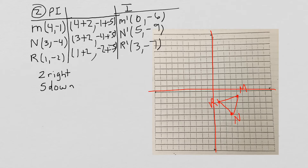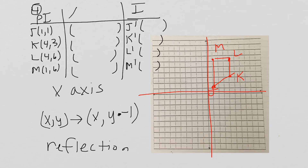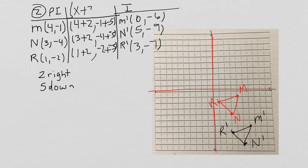To check, we start with M, go 2 to the right and 5 down — that should be 6, negative 6, which is M prime. Then we go 2 to the right and 5 down to get R prime. Connect the dots; the ordered pairs should match our PI chart. Our algebraic expression is x plus 2, comma, y plus negative 5 — you can also write y minus 5.